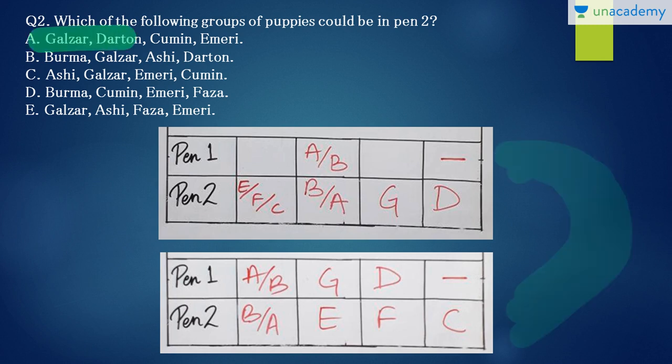Now we'll check the options. Option A, Galzar, Dartan, Cumin and Emeri. Galzar, Dartan, Cumin or Emeri. They can't come together in this case. So this is not true. Burma, Galzar, Ashi and Dartan. Burma, no, Galzar, Dartan, no, this is not possible. Burma, Galzar, Ashi and Dartan is not possible. Burma and Ashi can't come together. Option C, Ashi, Galzar, Emeri and Cumin. Ashi, Galzar, Emeri and Cumin. No, Galzar and Cumin can't come together if they are along with Ashi and Emeri. Now option D, Burma, Cumin, Emeri and Faza. Burma, Cumin, Emeri and Faza. Yeah, this is possible case. So option D is the correct answer.